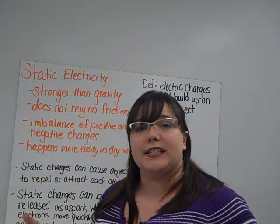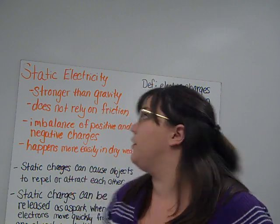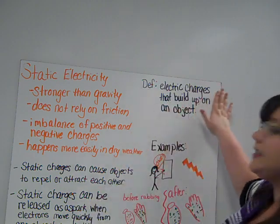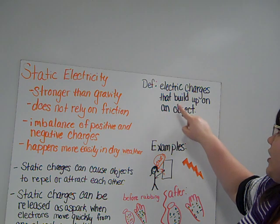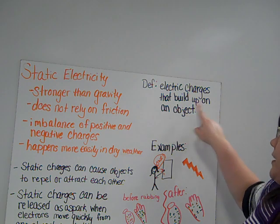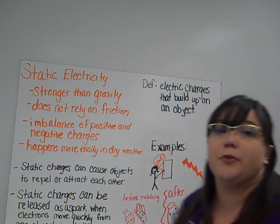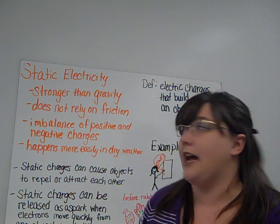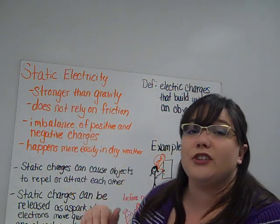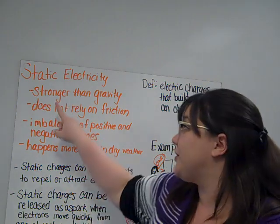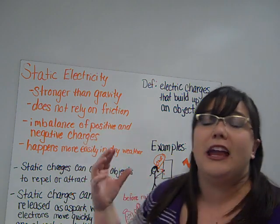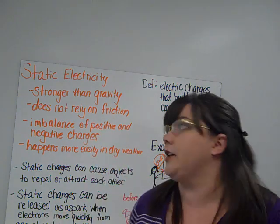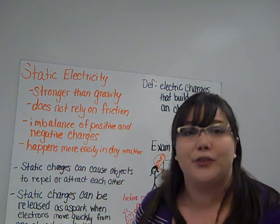Static electricity is something a little bit easier to grasp — we see it all the time. Static electricity is defined as electric charges that build up on an object. Whenever electric charges build up on something, we can have static electricity. Static electricity is actually stronger than gravity — stronger than the force that's binding you to Earth and pulling you down. Crazy, right?